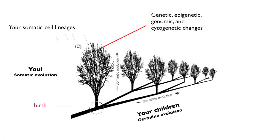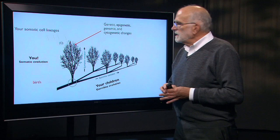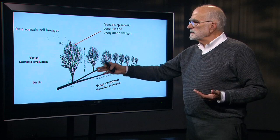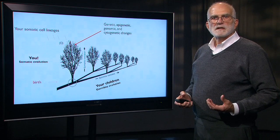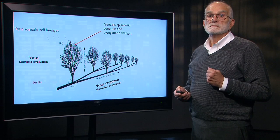What that means is that you are born and your somatic cells develop — that's your somatic evolution. Within that tree there are genetic, epigenetic, genomic, and cytogenetic changes. There is a lot of stuff that happens in your body that means that as an adult, your cells don't all look like the zygote that produced you.